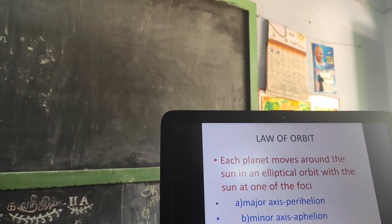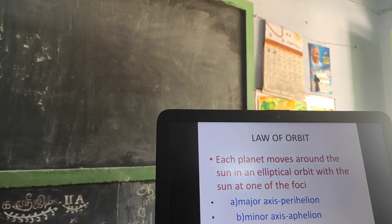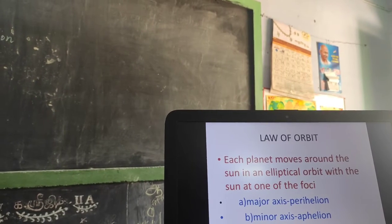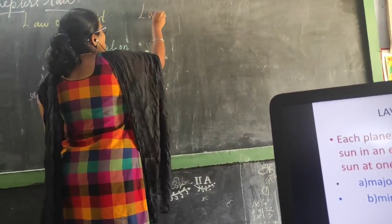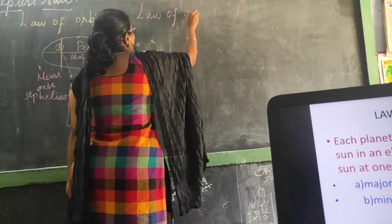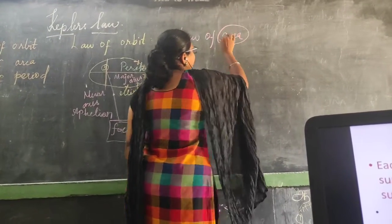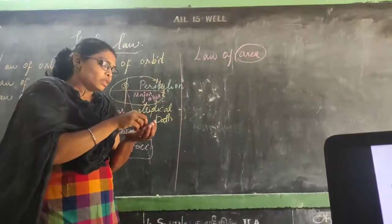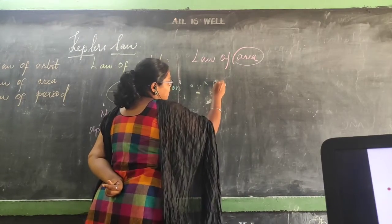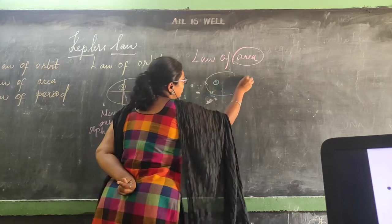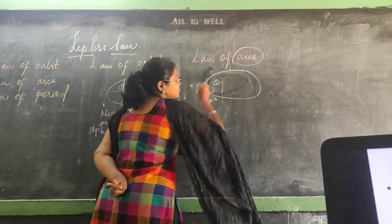Each planet revolves around the sun having the sun at one of its foci. Now the second law — what is the second law? The law of area. There is a relation between the word area and the law. Consider the sun and the planets revolving around it.